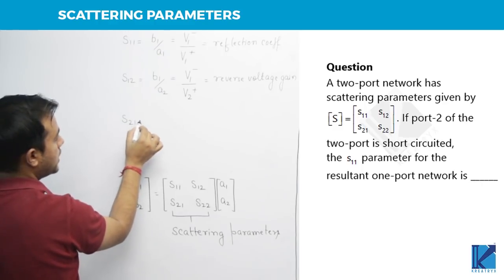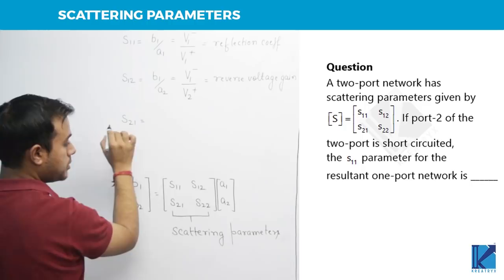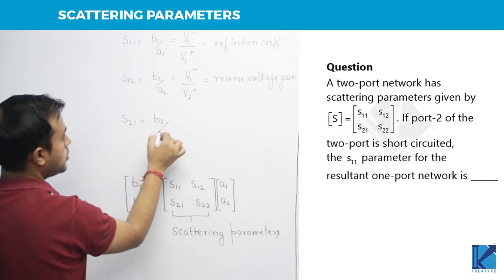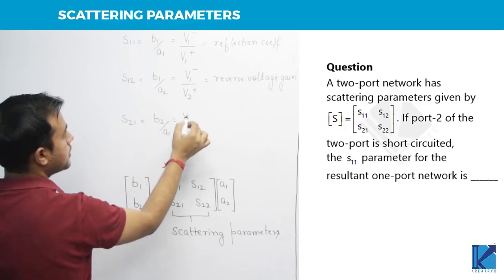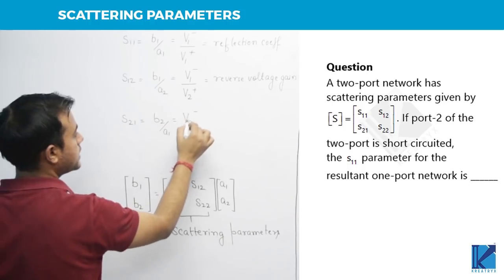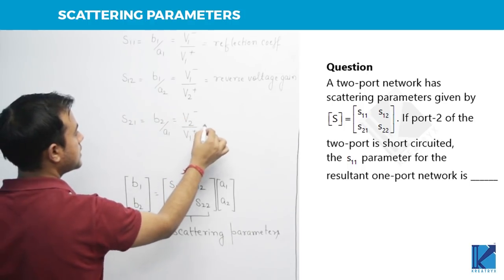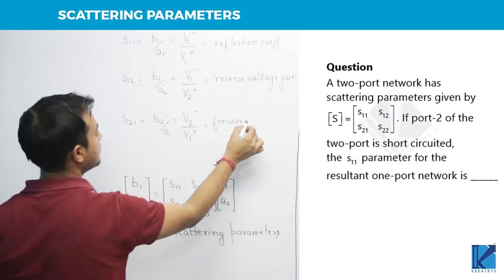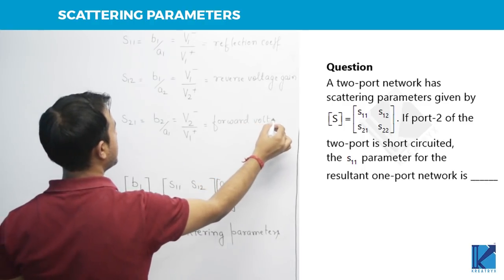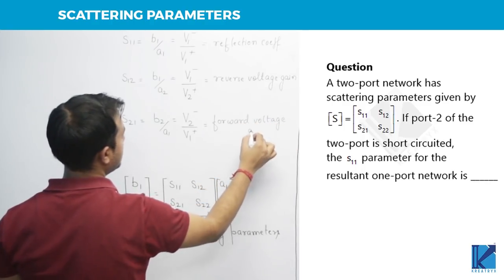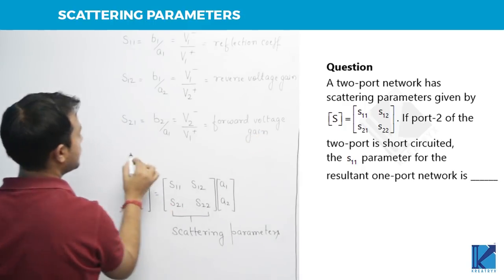Then S21 will be how much? B2 by A1. B2 minus by B1 plus.